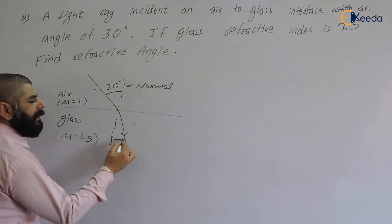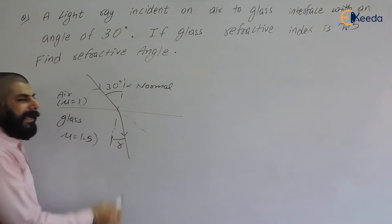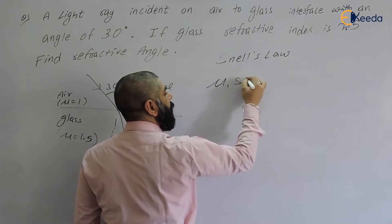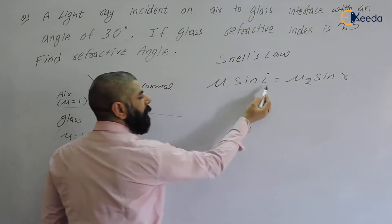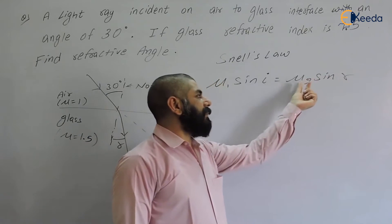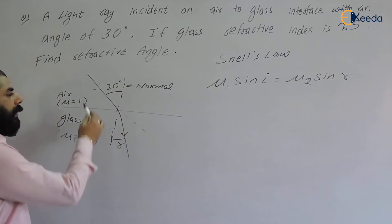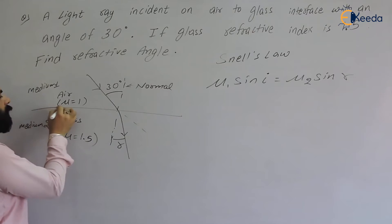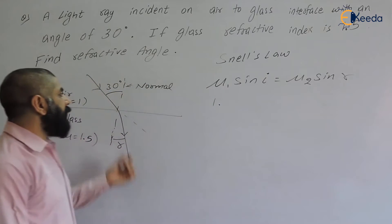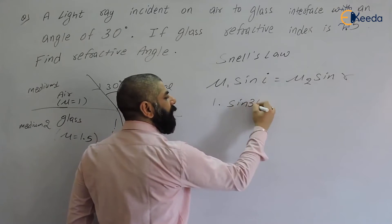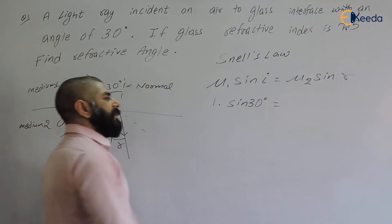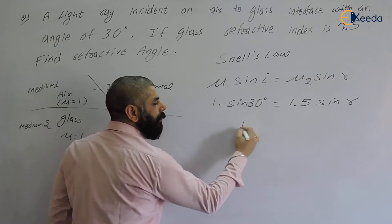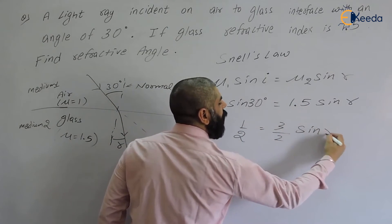We have to find this angle of refraction, which we can find using Snell's law. According to Snell's law: μ₁ sin(i) = μ₂ sin(r), where i is the angle of incidence and r is the angle of refraction. μ₁ is the refractive index of medium 1 (air = 1) and μ₂ is the refractive index of medium 2 (glass = 1.5). So: 1 × sin(30°) = 1.5 × sin(r). Sin 30° equals 1/2, and 1.5 can be written as 3/2.